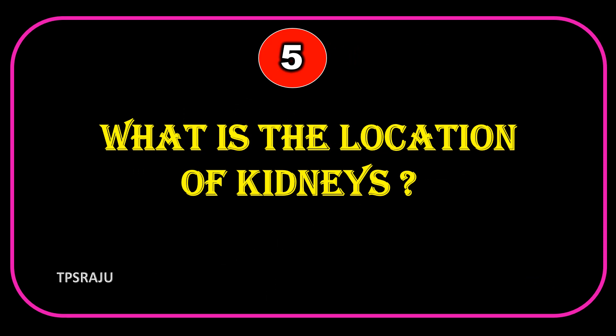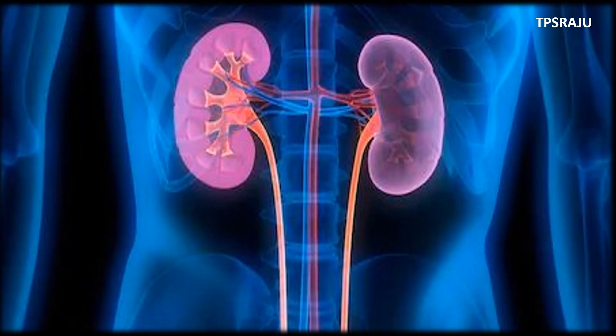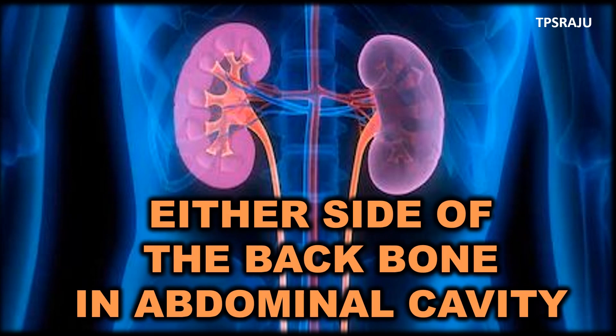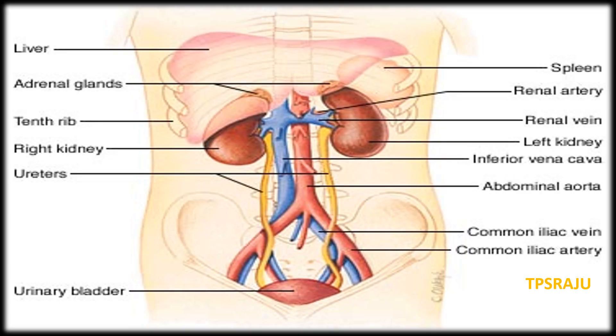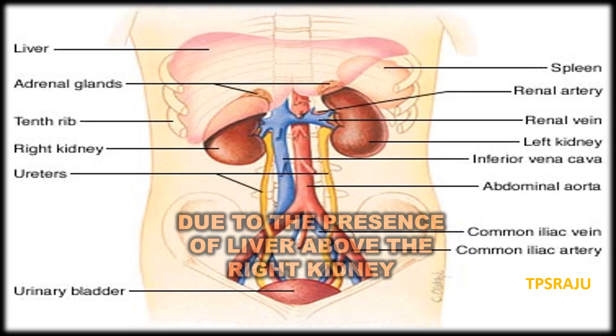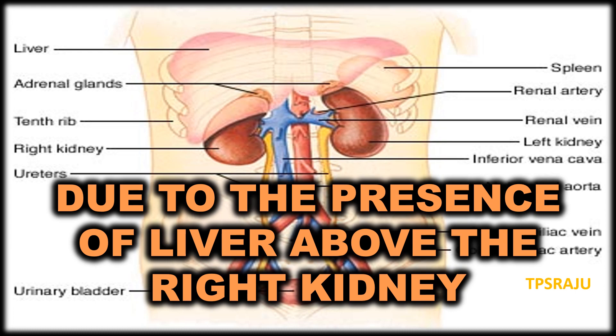What is the location of kidneys? Either side of the backbone in the abdominal cavity. The position of the right kidney is lower than the left kidney. Why? Due to the presence of liver above the right kidney.